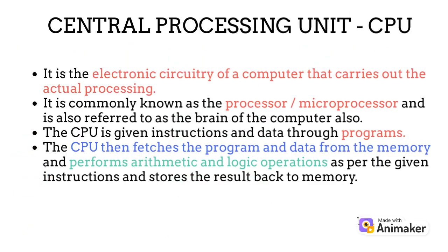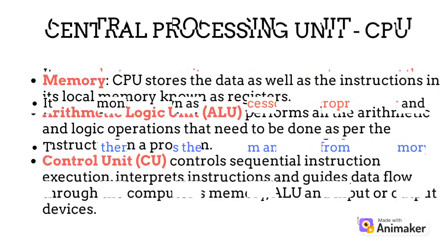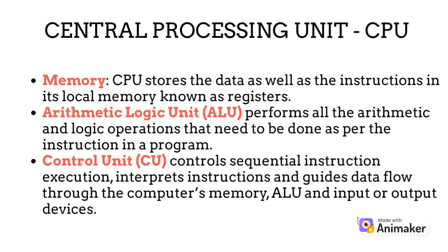CPU is the brain of the computer, also known as processor or microprocessor, which stores the data and performs computation on it as per command. It is the electronic circuitry of a computer that carries out the actual processing. The CPU is given instructions and data through programs. It then fetches the program and data from the memory and performs arithmetic logic operations as per the given instructions, and stores the result back into memory. The three main aspects of a CPU are memory, arithmetic and logic unit, and the control unit.